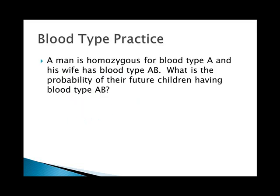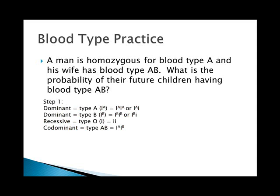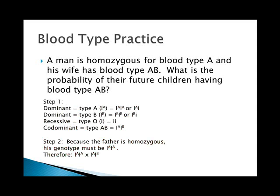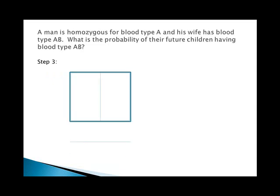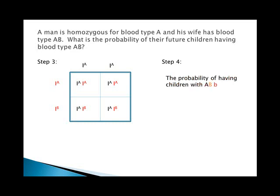Another example: a man is homozygous for blood type A — so he's I^A I^A — and his wife has blood type AB — I^A I^B. What is the probability their children will have blood type AB? Set up the Punnett square, put him on top and her on the side, bring column and row headings across. Looking at the results, 50% of their children will have type AB blood — those are the I^A I^B squares.